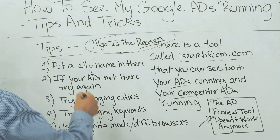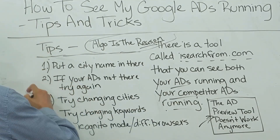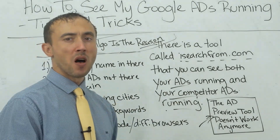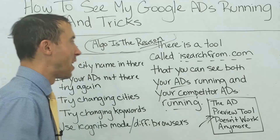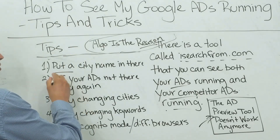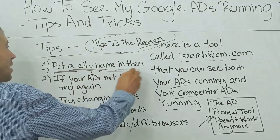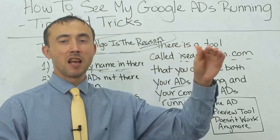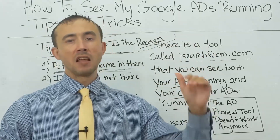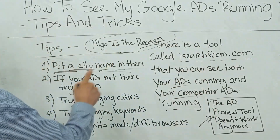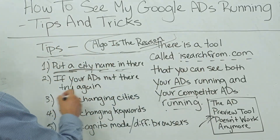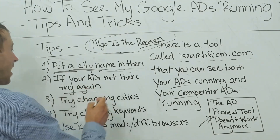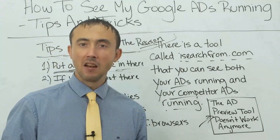Going back to the iSearchFrom tool — the way to use it to get the best results possible, and it's never going to be perfect: first, use the tool and make sure you put a city name in. Don't just put 'United States' — put 'United States and Denver' or 'Dallas' or whatever city you want. If that does not get your ad to trigger, try it again with the same settings. Sometimes it will take three, four, or five attempts of searching for the ad to pop up.